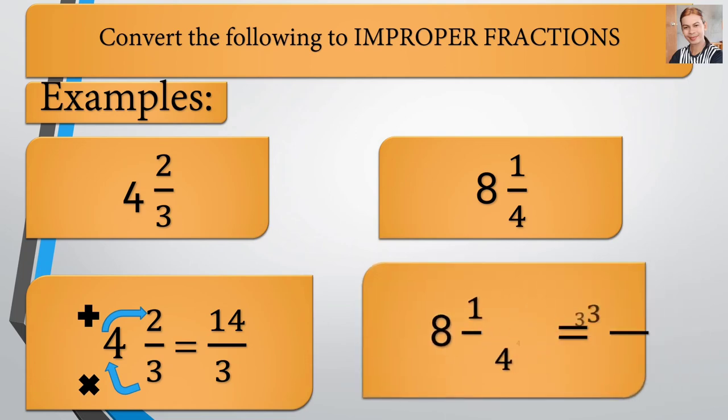Next example is 8 and 1 fourth is equivalent to 33 over 4. We multiply 4 by 8, that is 32 plus 1. That is 33 over 4.